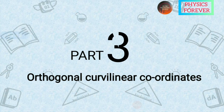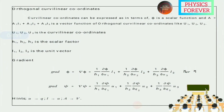We move on to Part 3: orthogonal curvilinear coordinates. We have to express in terms of three terms: phi is a scalar function, and A is a vector expressed as A = A1·l1 plus A2·l2 plus A3·l3, where l1, l2, l3 are unit vectors.